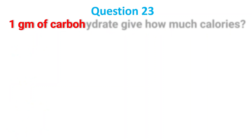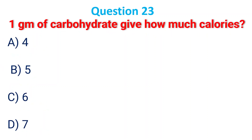1 gram of carbohydrate provides how many calories? A. 4; B. 5; C. 6; D. 7. The answer is A, 4 calories.